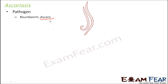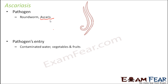Most infected persons will have mild cases with no symptoms. Sometimes even if you have these worms inside your body there will be no symptoms, but heavy infection can give rise to complications. They enter through contaminated water, vegetables and fruits. Roundworms are especially found in raw vegetables and fruits.